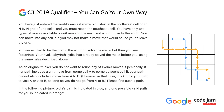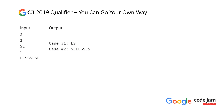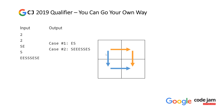Please find such a path. In the following picture, Lydia's path is indicated in blue and one possible valid path for you is indicated in orange. Let's take a look at the two test cases that Google provided. The first test case is just two moves: south and then east. And for that case, Lydia's path is going south first and then east, and you can see there's only one valid path — to go east and then south.